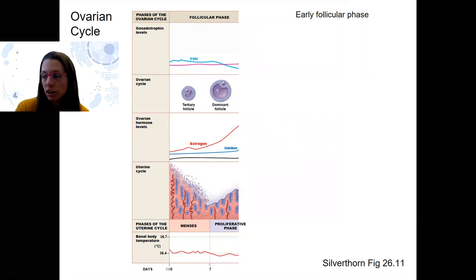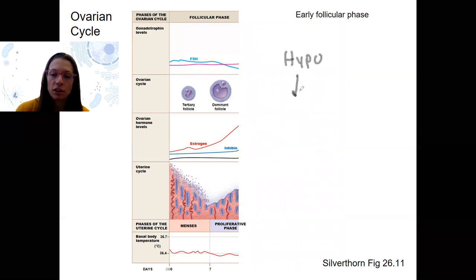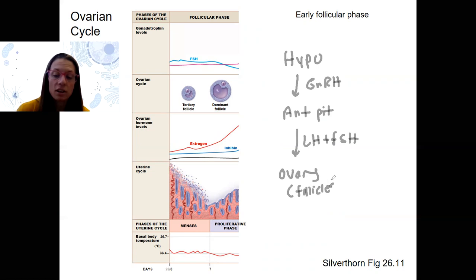We start with early follicular. So this is the phase before ovulation when estrogens are increasing before the LH surge. We're going to draw out our hypothalamic pituitary gonadal axis. And you should be able to do this in your sleep when you target the ovary. Specifically, at this time point, it's the follicles that are developing.